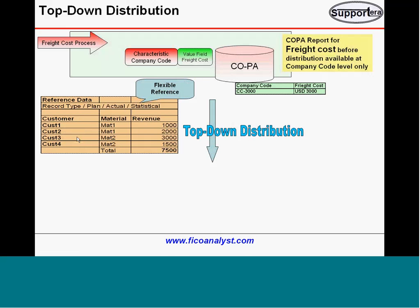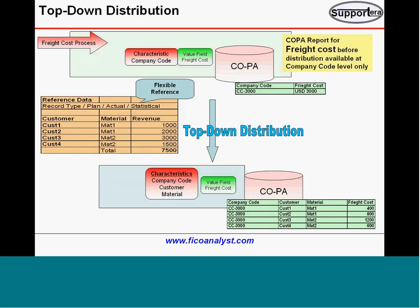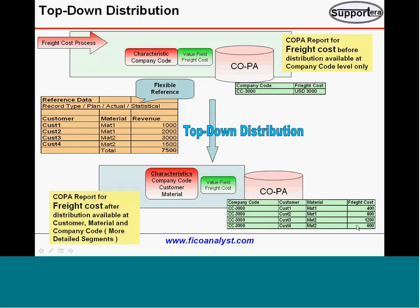You start distributing it. When you distribute, you will have characteristics: company code, customer, and material. You are distributing the freight cost. Once you are done with COPA top-down distribution, the values in COPA will be: company code 3000, customer 1, material 1 — distributing this 3000 based on the reference factor. The COPA report for freight cost after distribution is now available at customer, material, and company code — a more detailed segment.